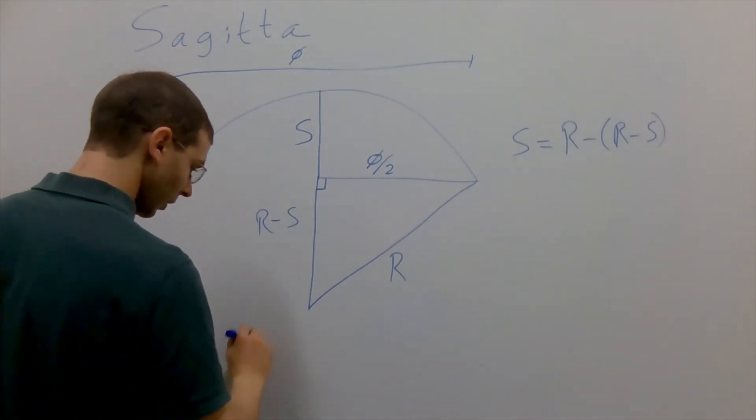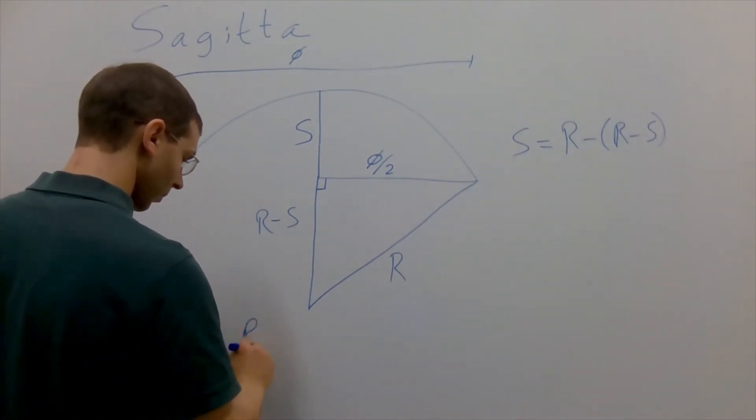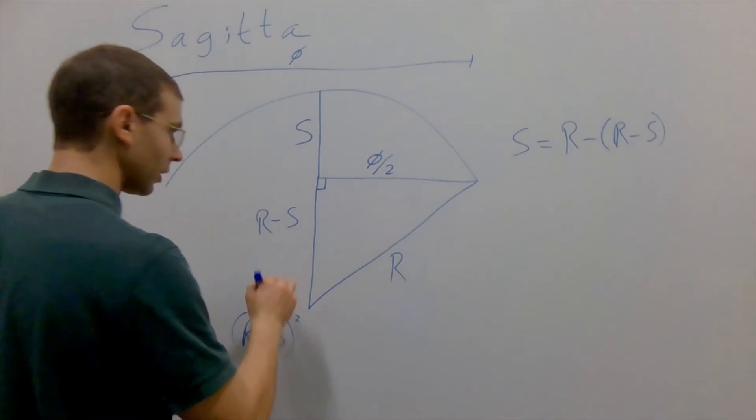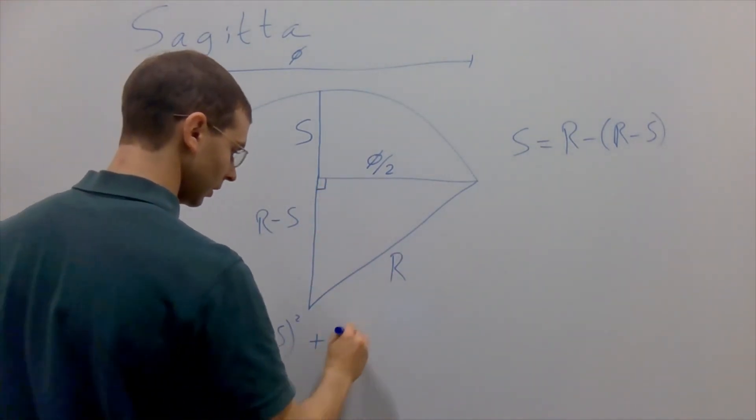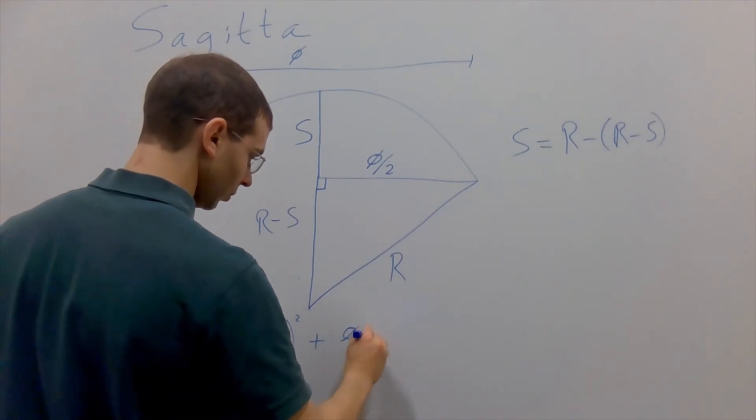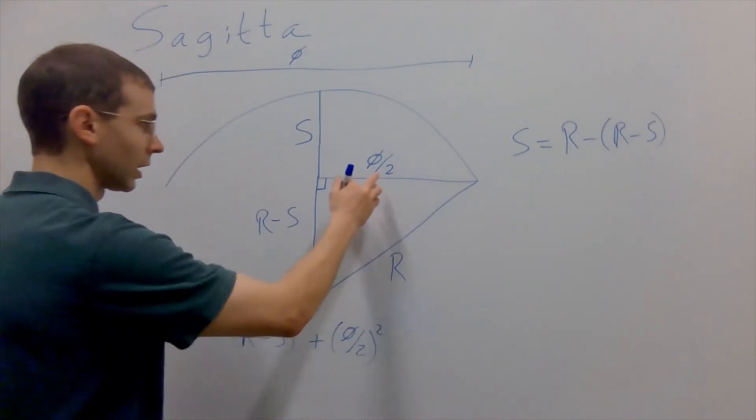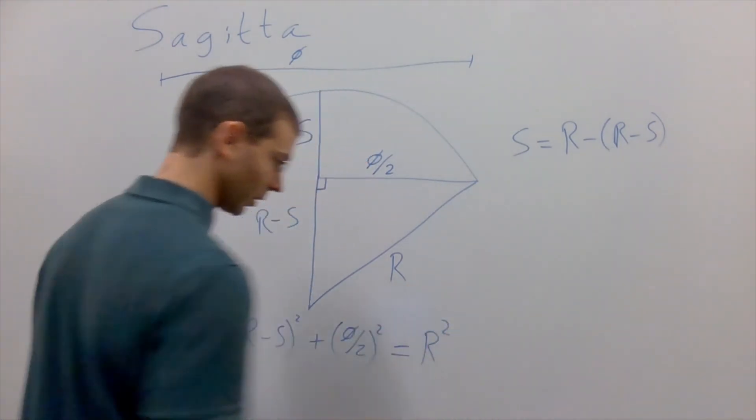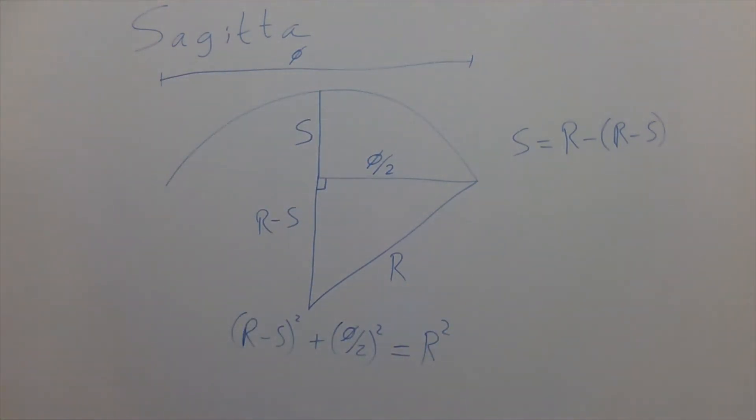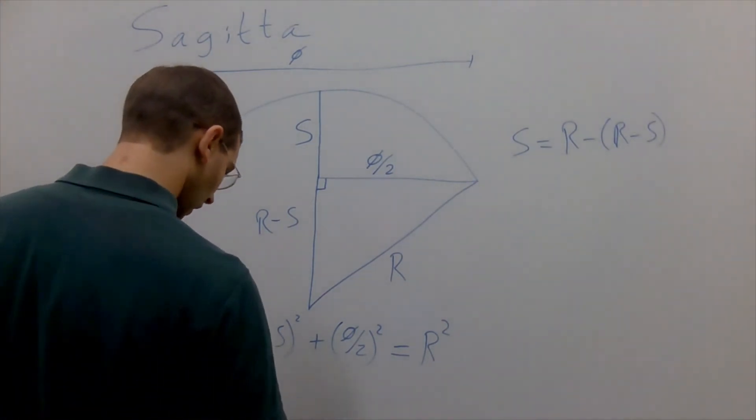So we have that r minus s, quantity squared—it's one leg of this right triangle—plus d over 2 squared, the other leg of that right triangle, is equal to r squared. Since we want this for r minus s, let's do a little more algebra.